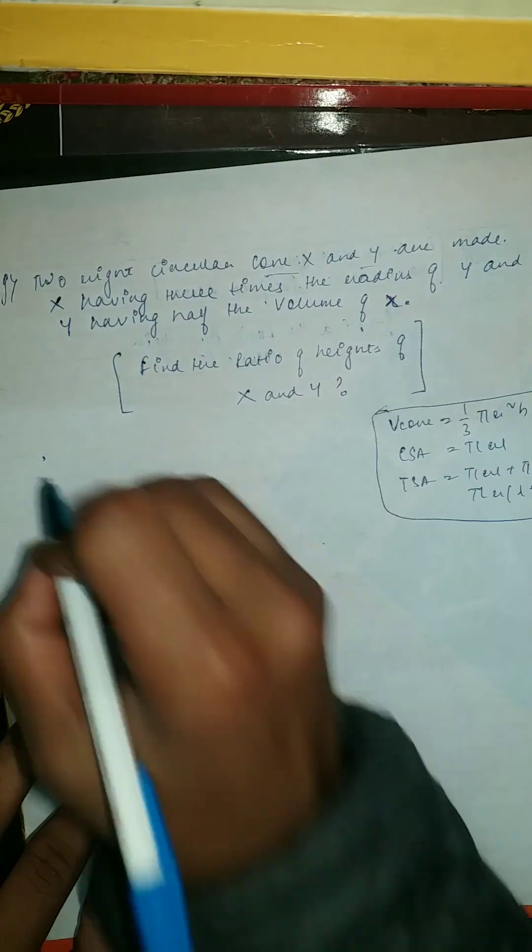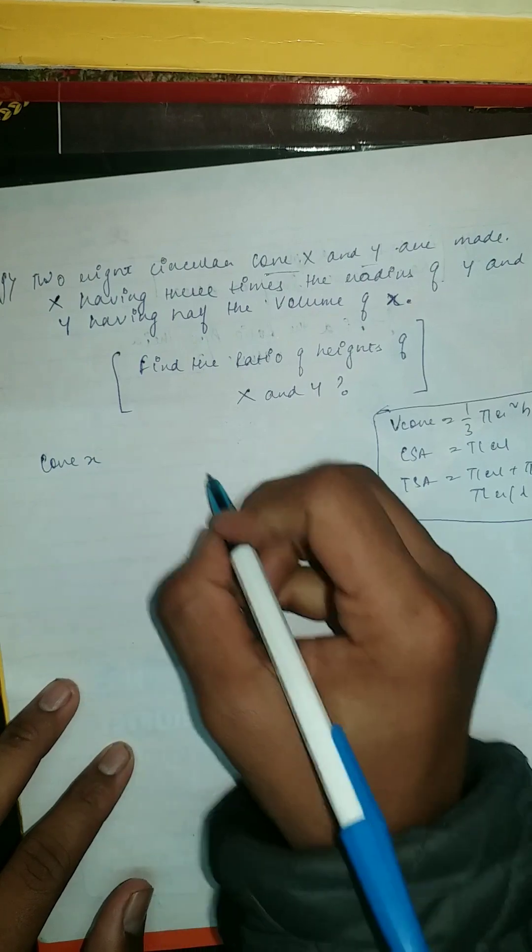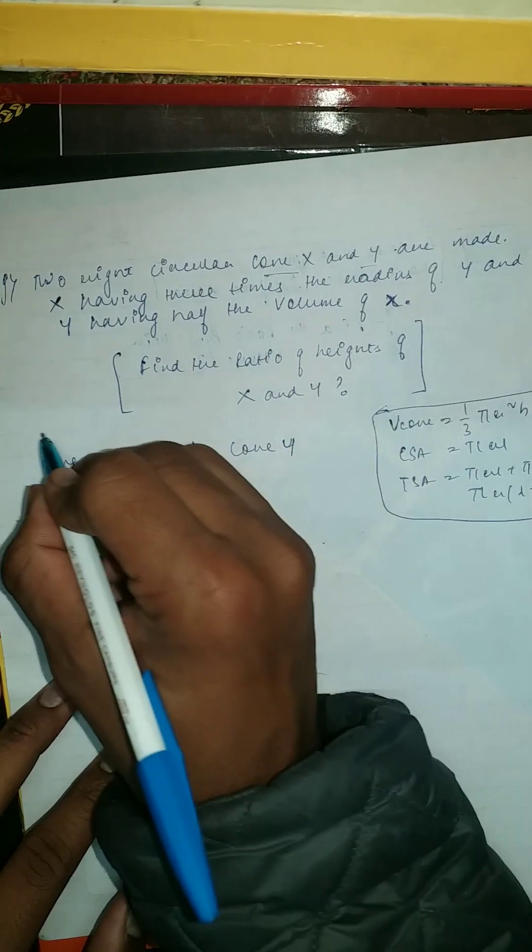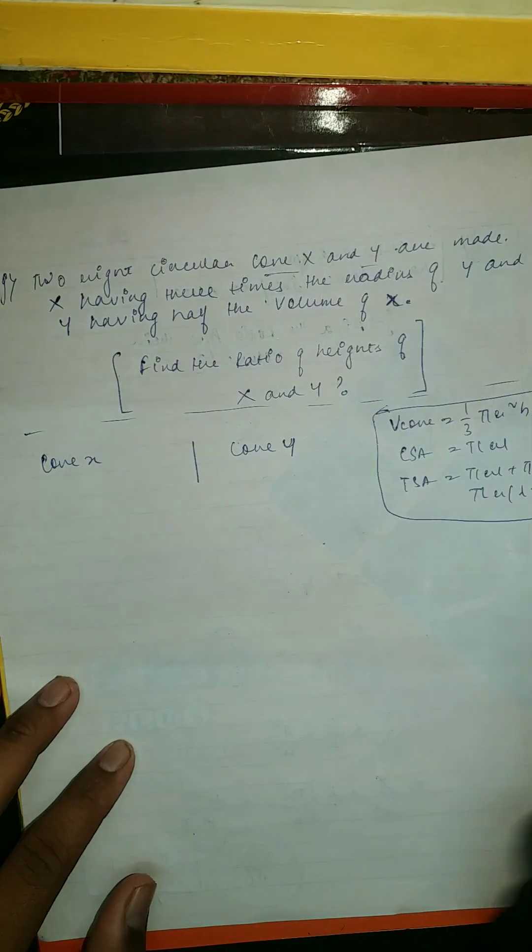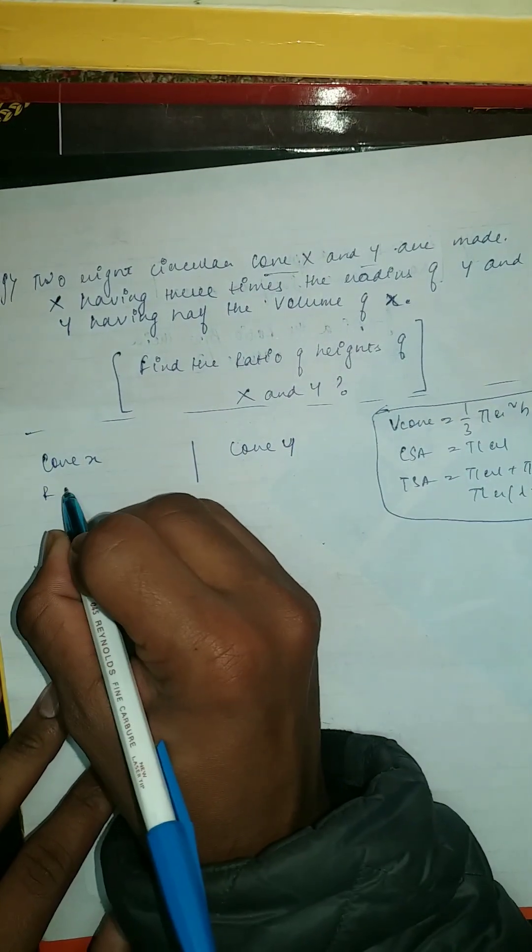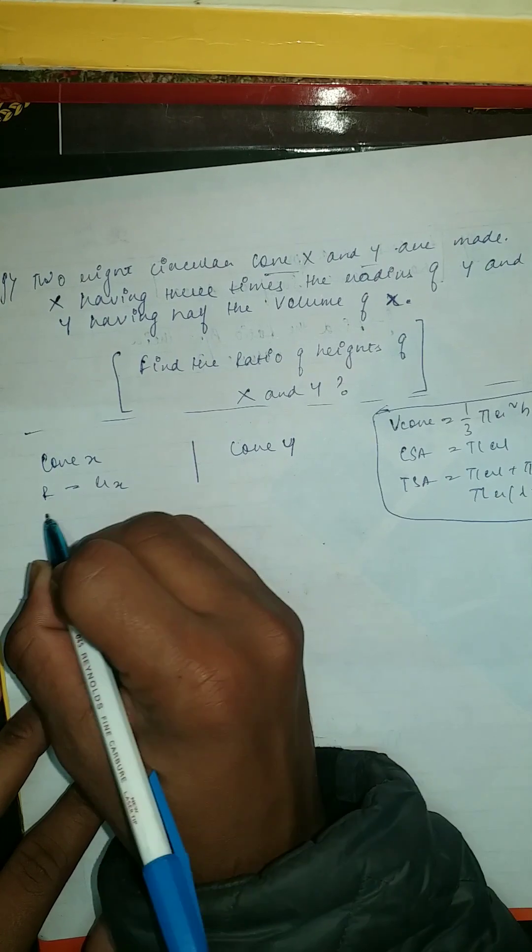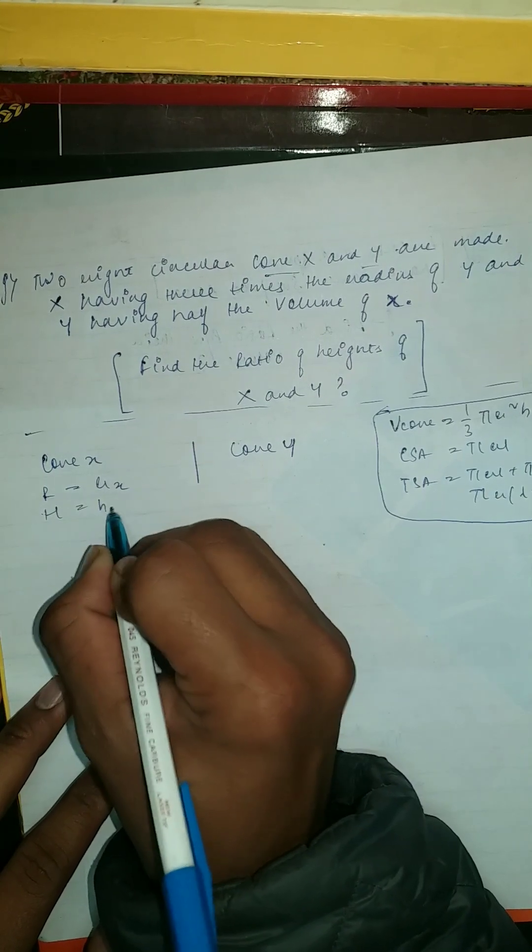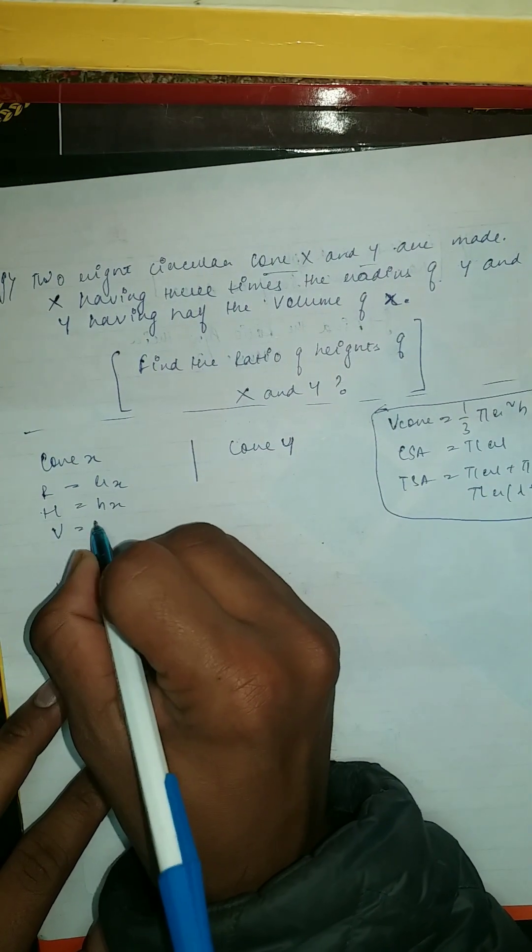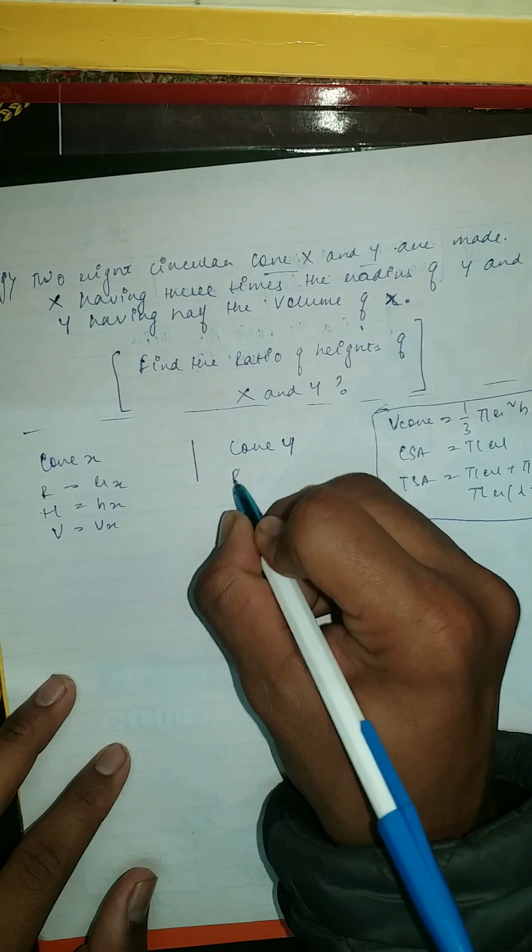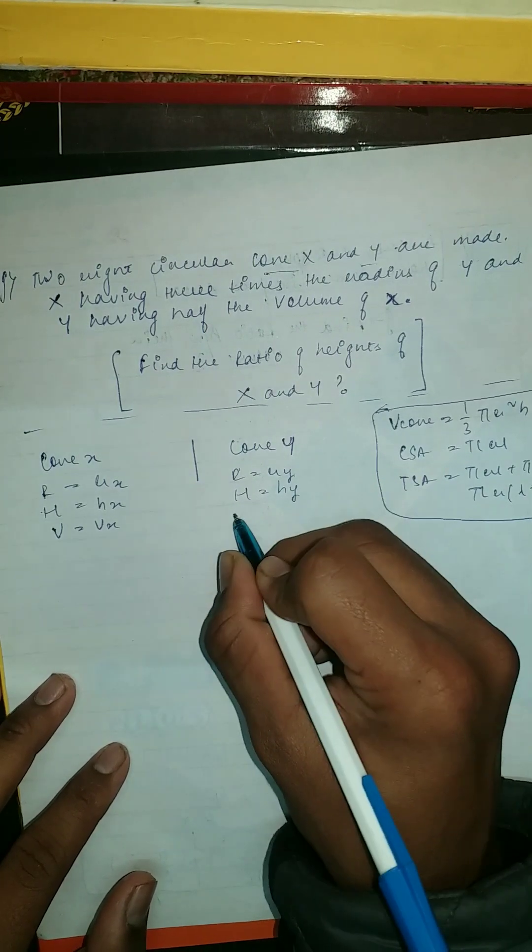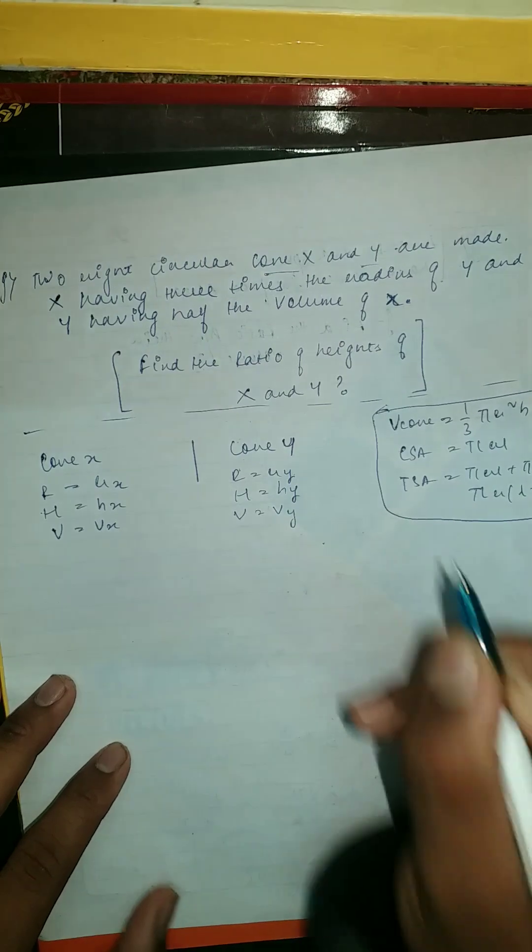Let it be cone X and cone Y. Cone X - radius is rx, h is hx, and v is vx. Similarly, r equals ry, h equals hy, and v equals vy. Let's read the condition.